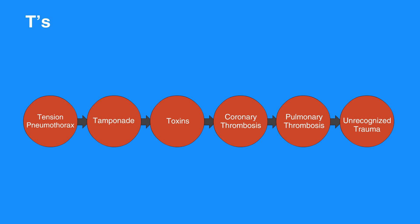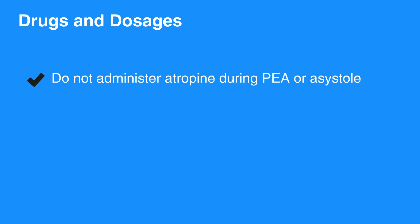Do not administer atropine during PEA or asystole. Although there is no evidence that atropine has a detrimental effect during bradycardic or asystolic cardiac arrest, routine use of atropine during PEA or asystole has not been shown to have a therapeutic benefit. Therefore, the AHA has removed atropine from the cardiac arrest guidelines.